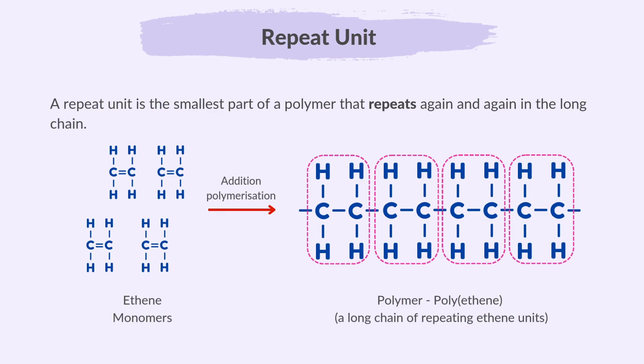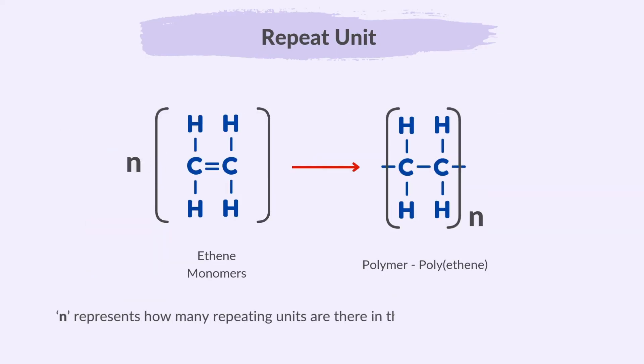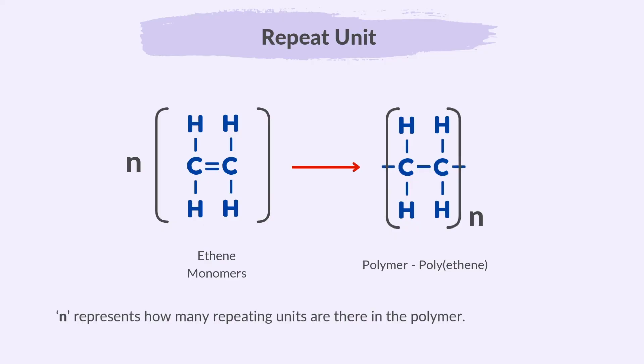In reality, a polymer has many repeat units, so it's not practical to draw each one. We use n to represent how many repeat units are in the polymer. To represent the repeat unit, place it inside square brackets, making sure the bonds touch the brackets on both sides, then write n outside the brackets to show many repeat units.